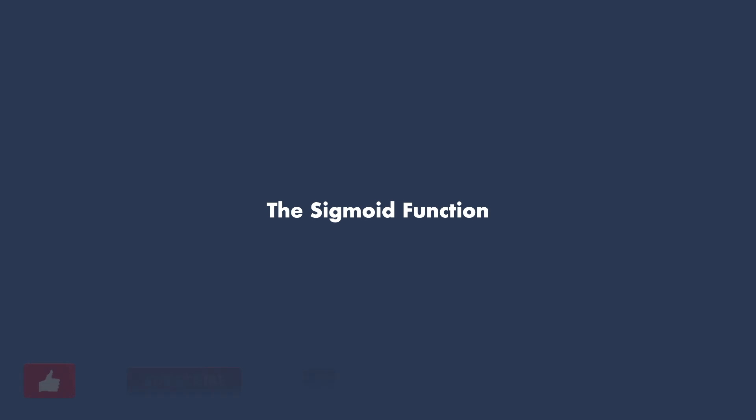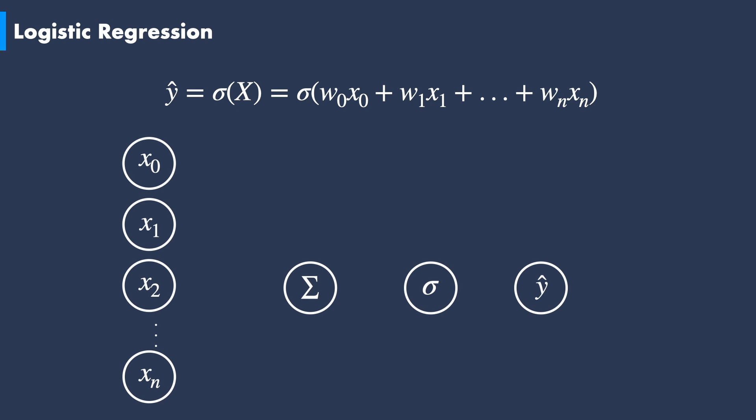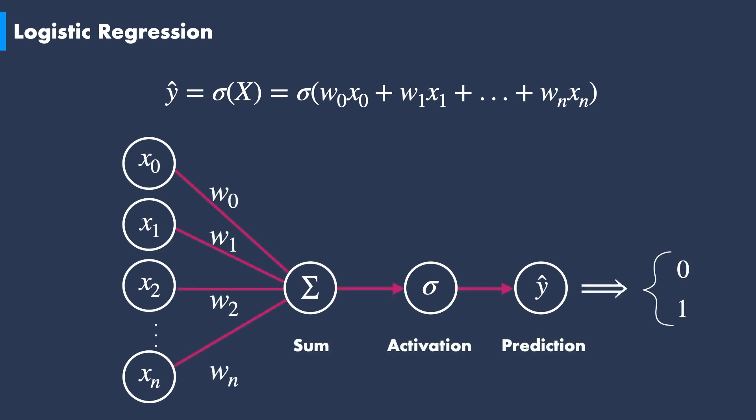In today's video, I want to talk about the sigmoid function. The sigmoid function plays an important role in the context of logistic regression. Logistic regression is a technique to predict the outcome of binary classification problems. In this case, the sigmoid function plays the role of an activation function. It takes the weighted sum of the input features as an input and outputs the probability value of the outcome.